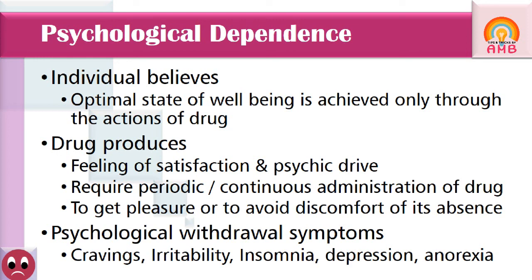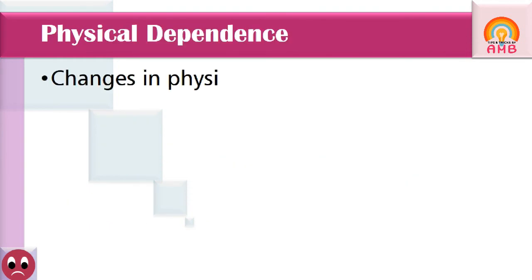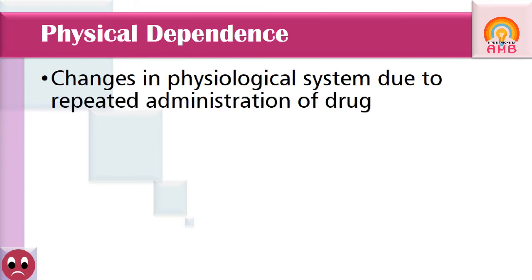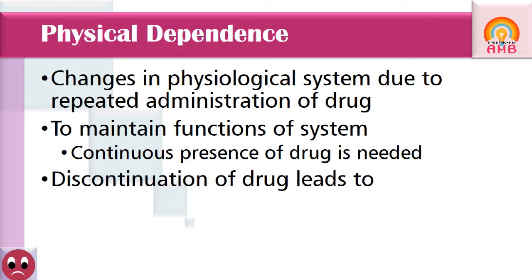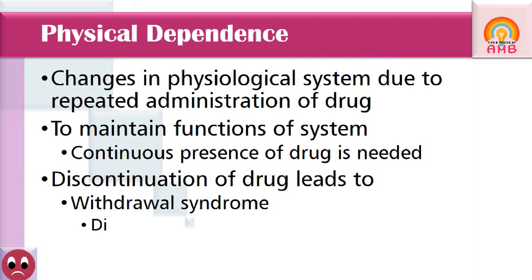Physical dependence involves changes in the physiological system due to repeated administration of the drug, which require the continuous presence of the drug to maintain the function of that system. Discontinuation in such cases results in a characteristic withdrawal syndrome, which includes dysfunctioning of that system.